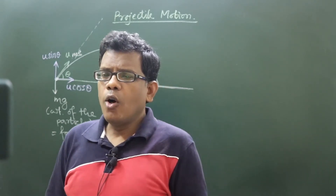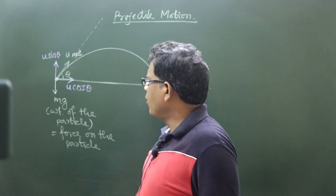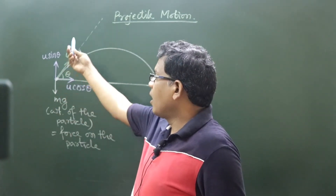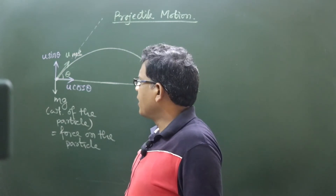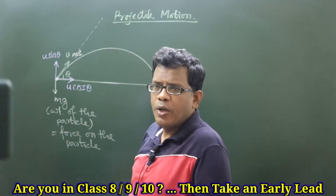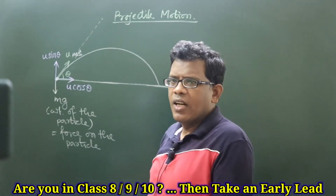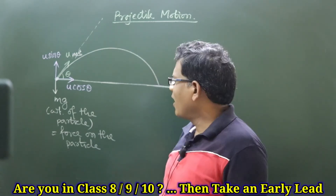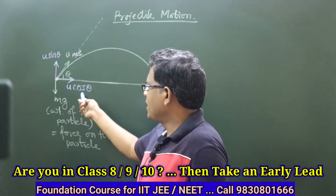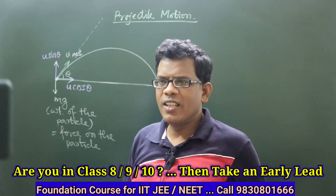Now many of you may ask: on which basis am I writing the horizontal component as u cos theta and the vertical one as u sin theta? Do you have a similar doubt? Are you confused? Does the question arise in your mind — why is this u cos theta and why is that u sin theta? Yes or no?